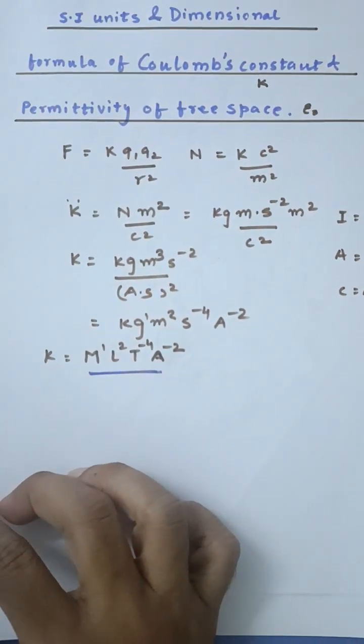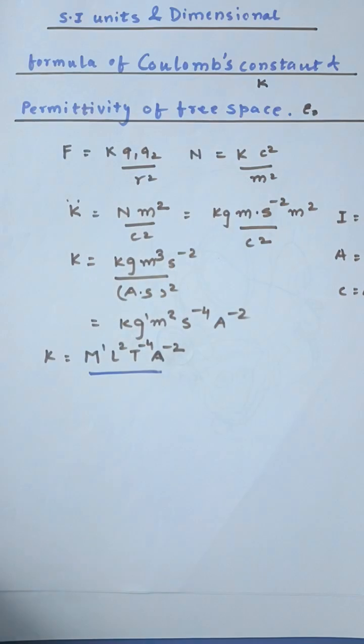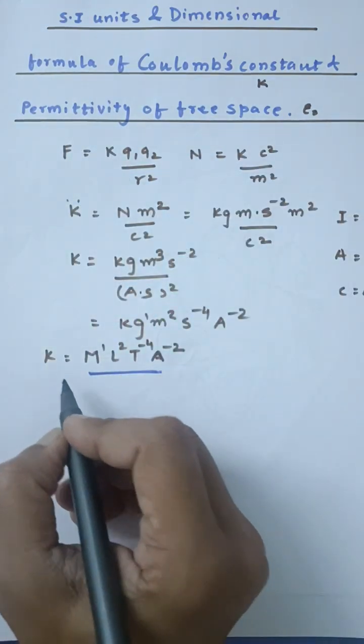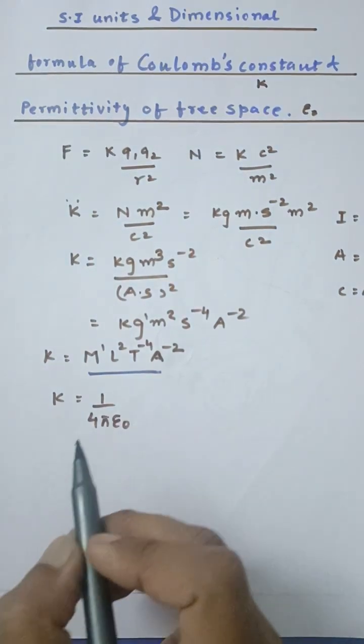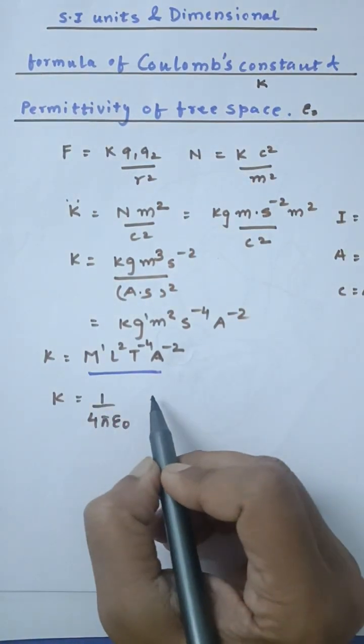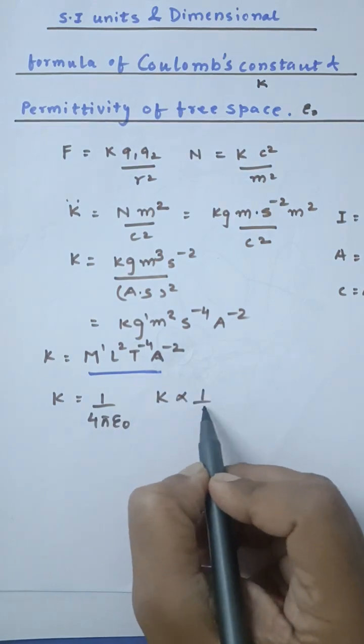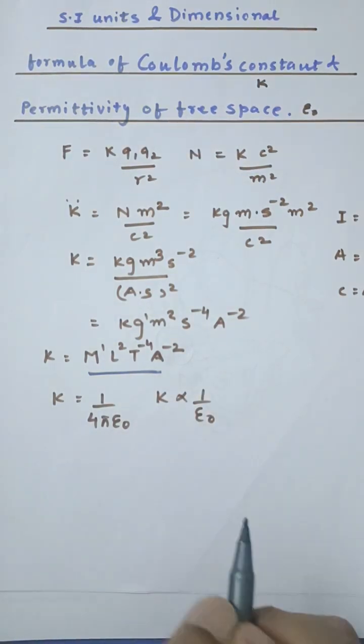Now, if you want to find the dimensional formula for the permittivity of the medium, as well as the SI unit, we know that K = 1/(4πε₀), which means 1/(4π) doesn't have any unit. So K and ε₀ are inversely proportional in terms of the unit.